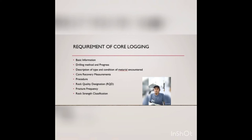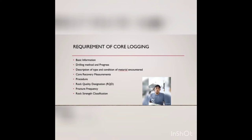After that, we have to find the RQD, which is the Rock Quality Designation. The equation uses the total length of core pieces greater than 100mm divided by the total length, multiplied by 100%. The percentage obtained from RQD allows us to classify rock quality, ranging from very poor, poor, fair, good, and excellent.